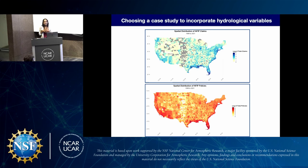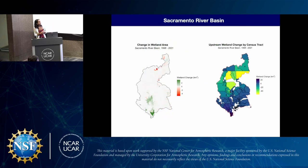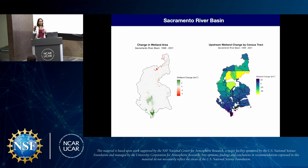Since my models are very social science-oriented and demographic variable-heavy, I wanted to spend this summer incorporating more hydrologic variables. I chose the Sacramento River Basin as a case study because it has a relatively high concentration of both NFIP claims and policies, and also inland wetland areas, since I wanted to focus on fluvial flooding rather than coastal storm surge. On the left is the change in wetland area from LCMAP by HUC-12 watershed, and on the right is the aggregation of wetland area upstream of all the HUC-12s upstream of a given census tract, to visualize these upstream-downstream dynamics.